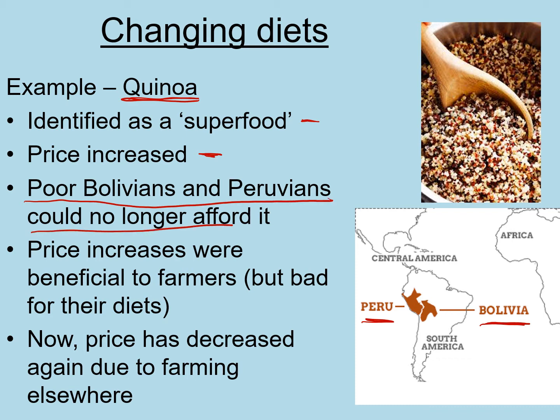The problem was that because the price increased, poorer Bolivians and Peruvians could no longer afford it. This nutritious grain provides many essential nutrients, but if poor people in Bolivia and Peru can't afford it, they couldn't access that food, causing malnutrition and food scarcity. The price increases were beneficial to farmers financially, but bad for their diets — they sold their quinoa and used the money to buy cheaper, less nutritious foods like pasta and potatoes, affecting their families' health.